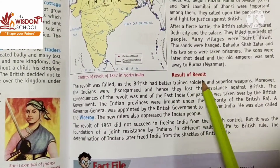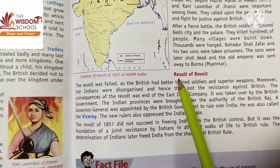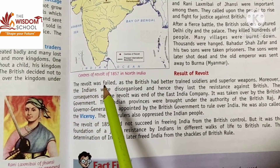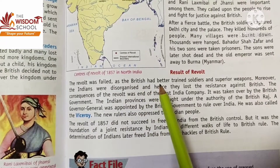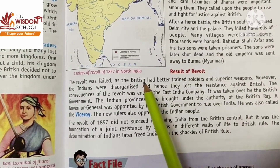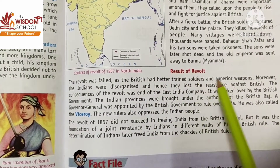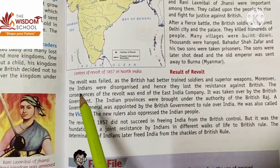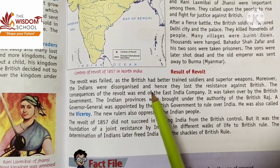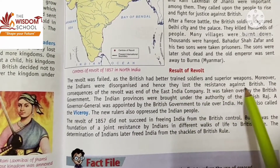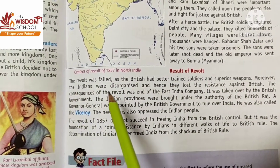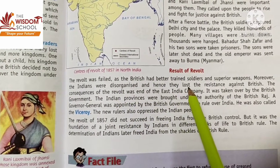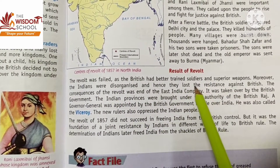The result of the revolt was failure. The revolt failed because the British had better trained soldiers and superior weapons. Moreover, the Indians were disorganized and had not done proper planning, and because of that they lost the battle against the British.